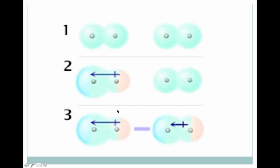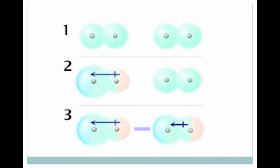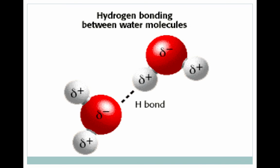The dispersion force works like this: it starts out with two molecules that are purely nonpolar with a very even distribution. When they come in contact with each other, they temporarily form two polar — two magnetic — molecules. As soon as they move away from each other, that's done. That's why we call it an induced dipole: it only happens when they're close together. When they're not close, they're not polar, which is why it's a very brief and very weak attraction.